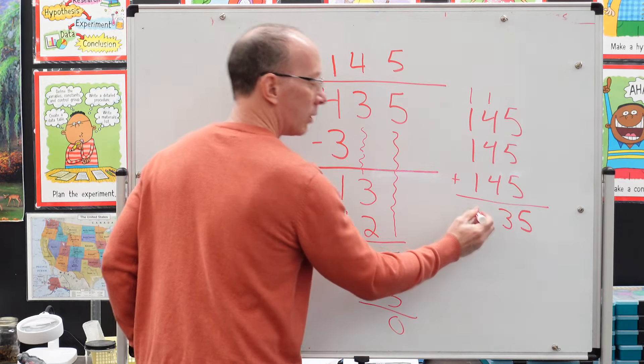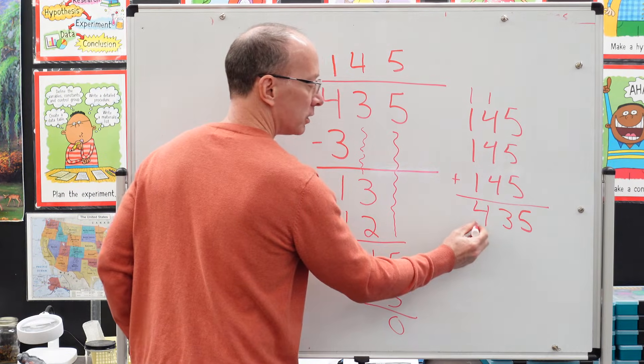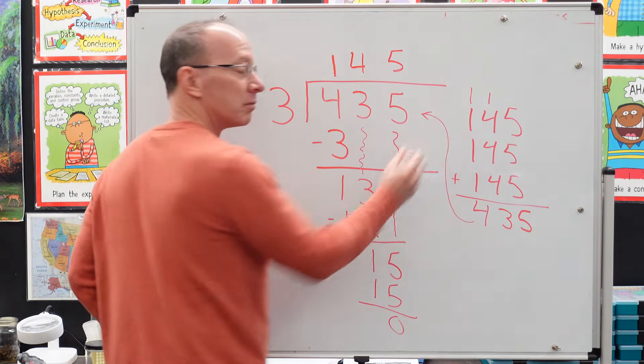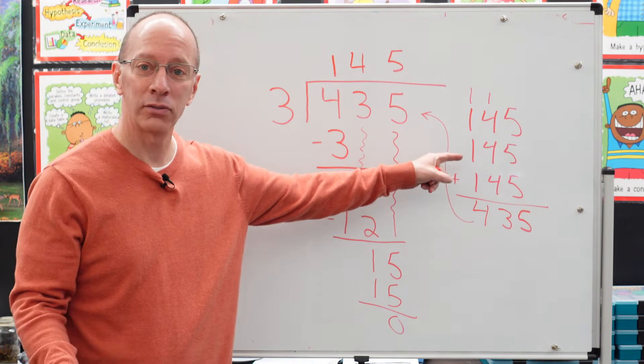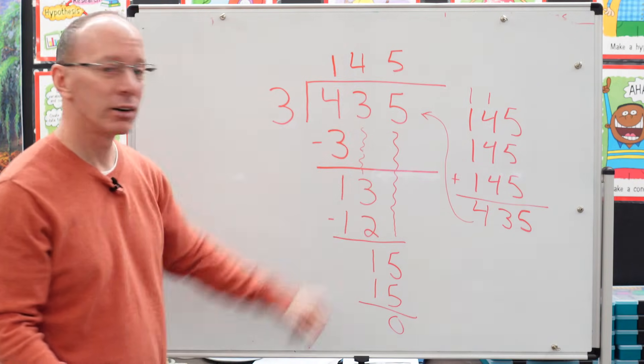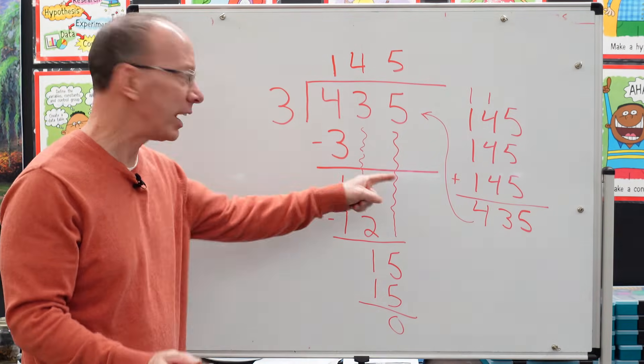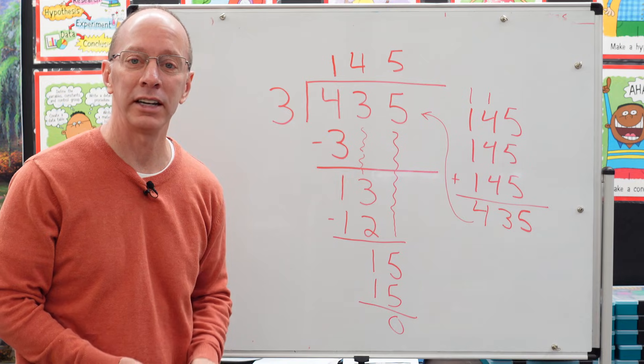1, 2, 3, 4. Does my answer match? Yes, it is. So we have three groups of 145 right here. 435 divided by three is 145.